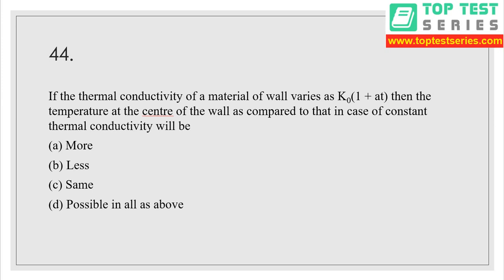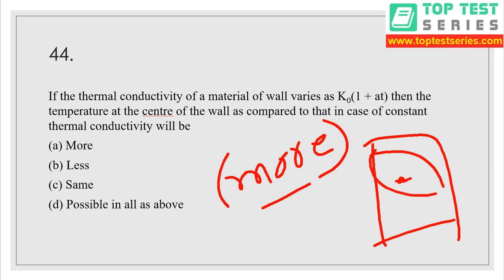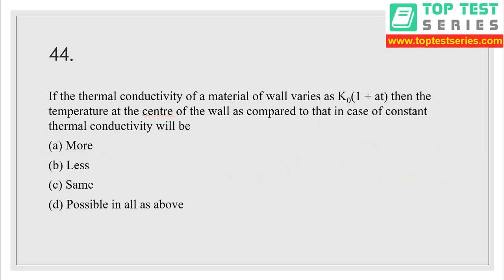Question number 44: if the thermal conductivity of a material of wall varies as K-naught(1 + αT), then temperature at the center of the wall as compared to the case of constant thermal conductivity will be more. Thermal conductivity should be the same throughout the body; at the center, the temperature of the material will be more — therefore option A is the correct answer.